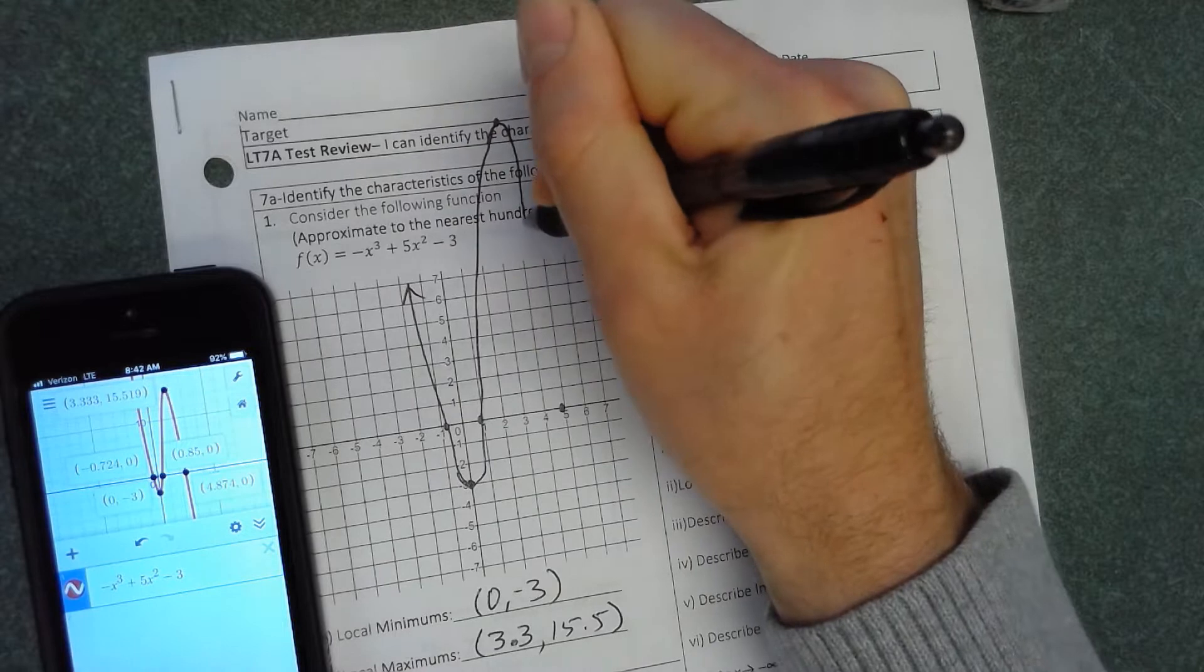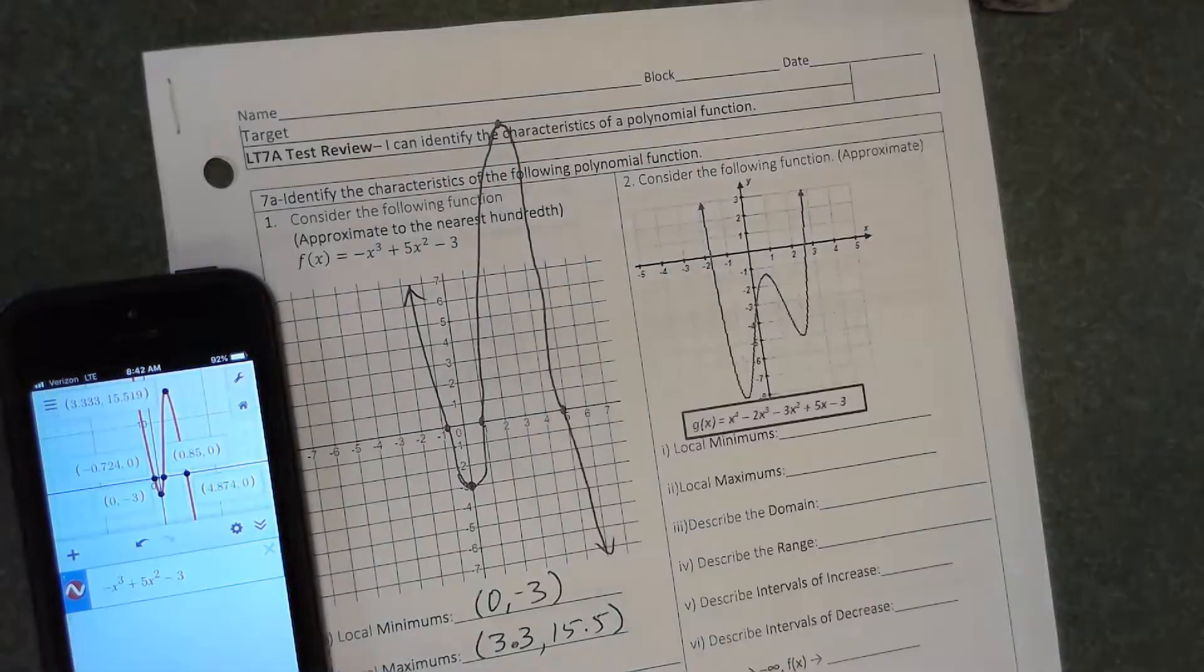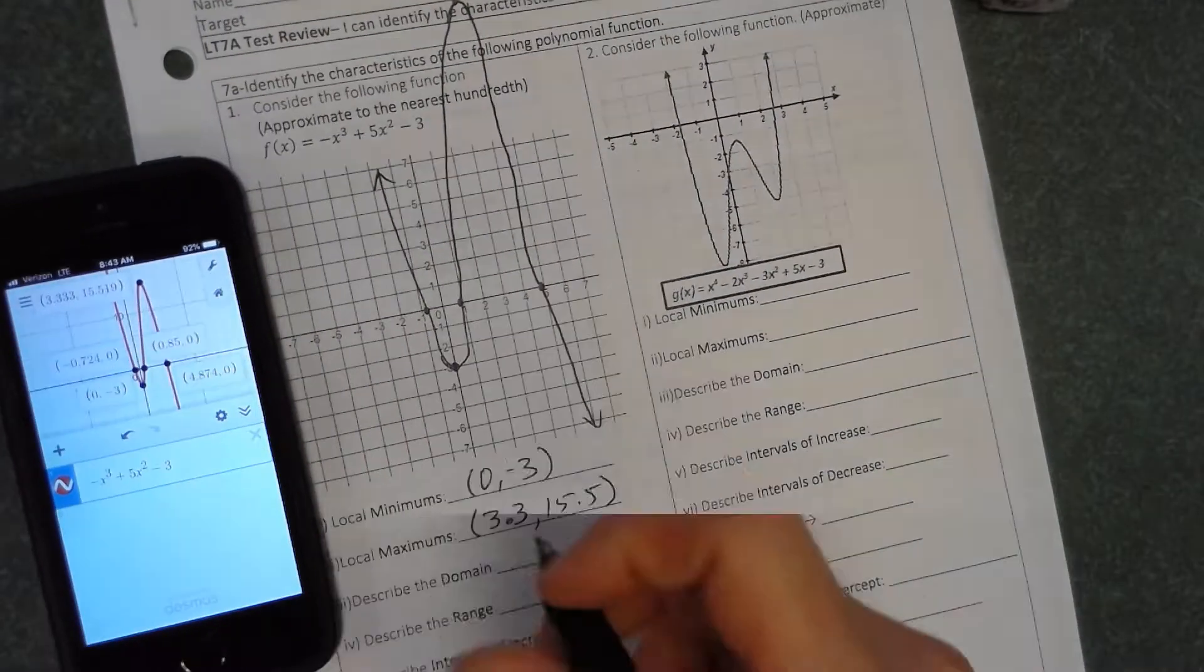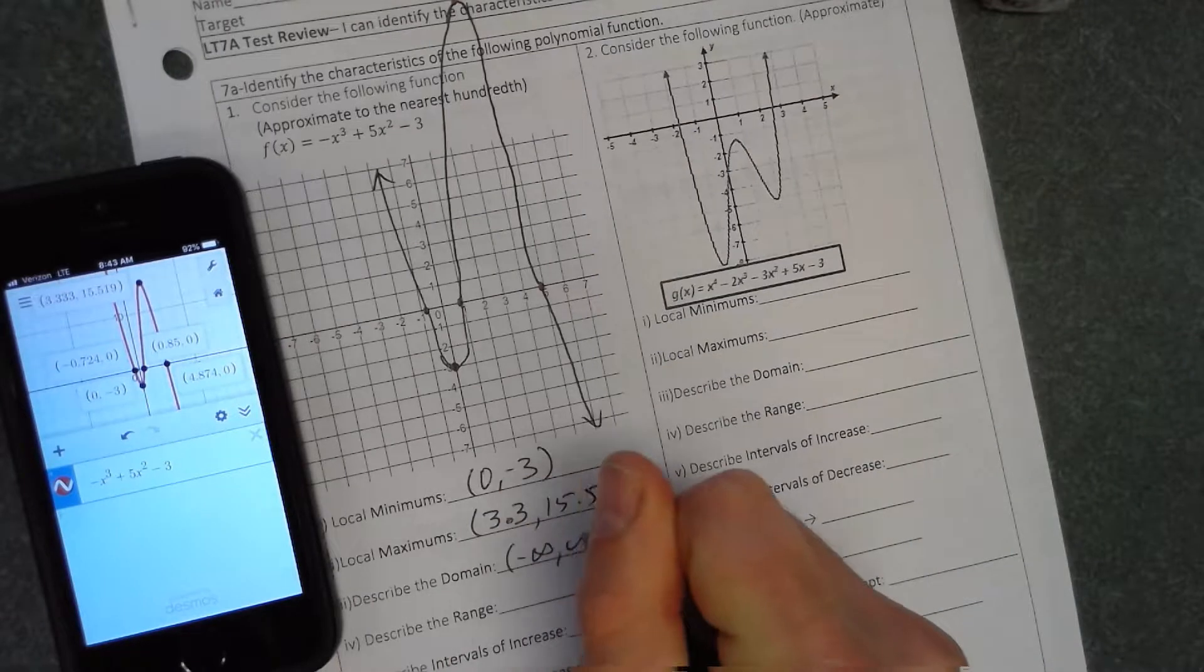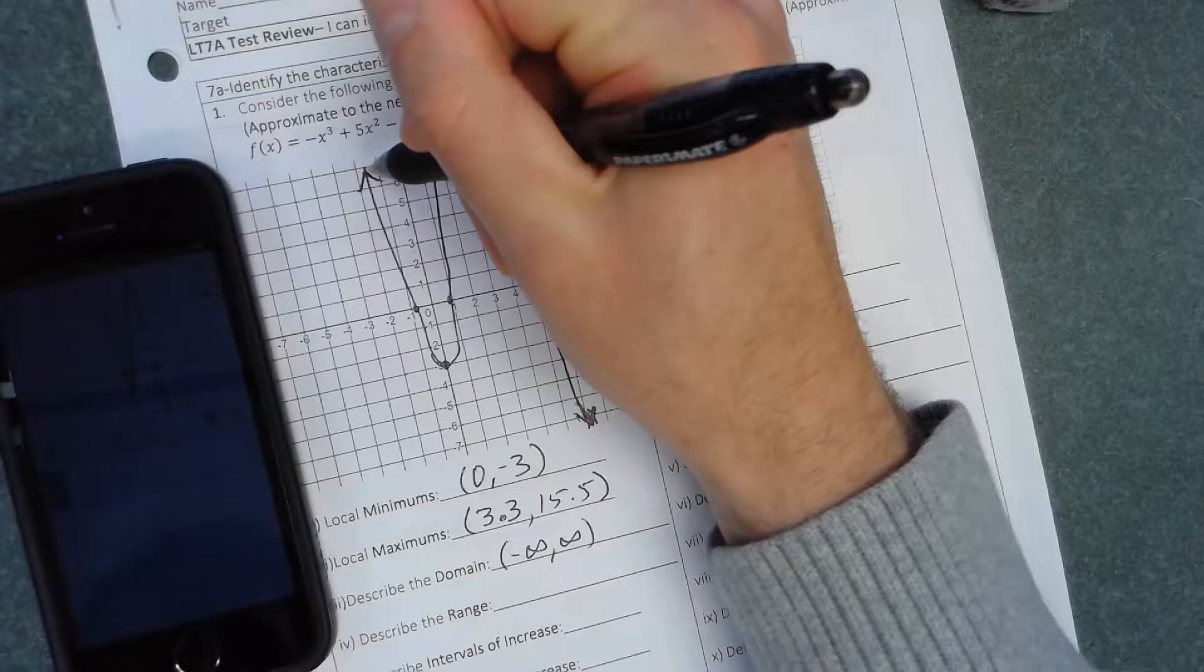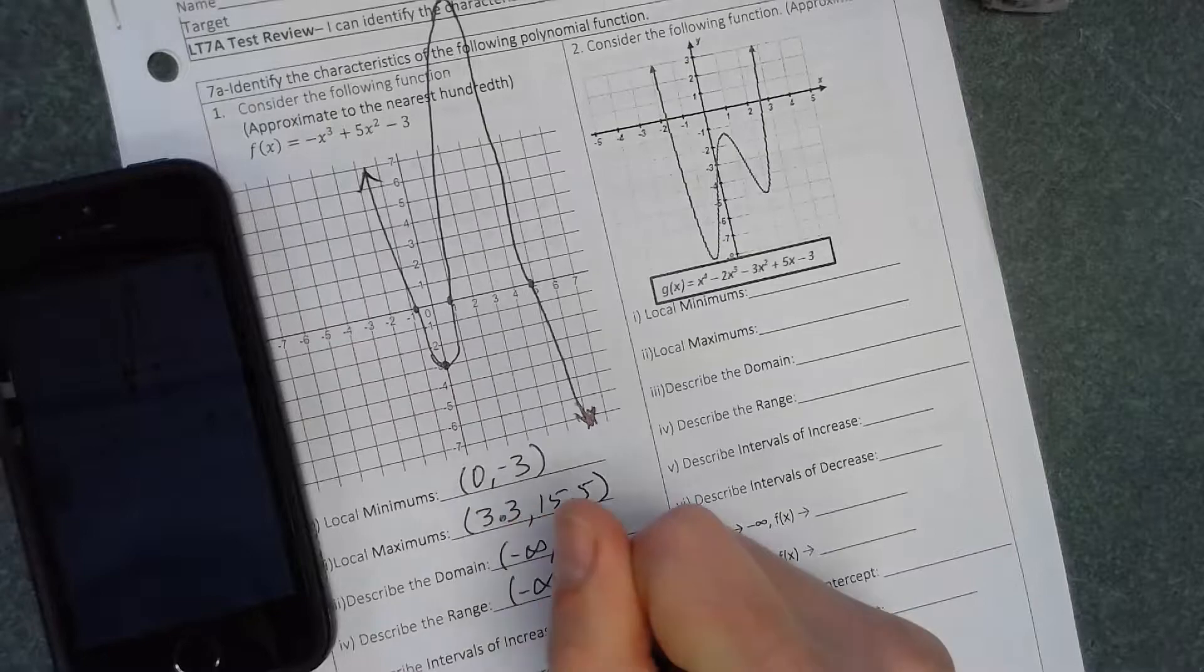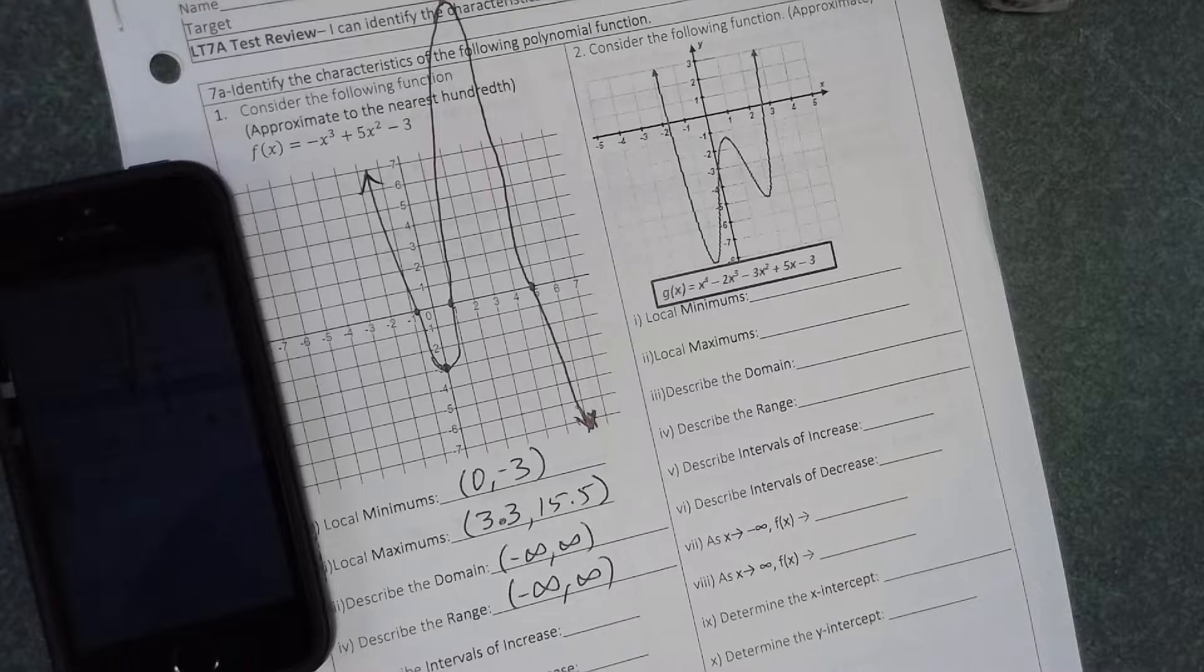Now we can look at domain and range. Domain is how far left, how far right, all your x values. That's negative infinity to infinity. The range is how low to how high. Well, it's going to continue to go down and up, so it goes from negative infinity to infinity. Always go from smallest to biggest numbers.